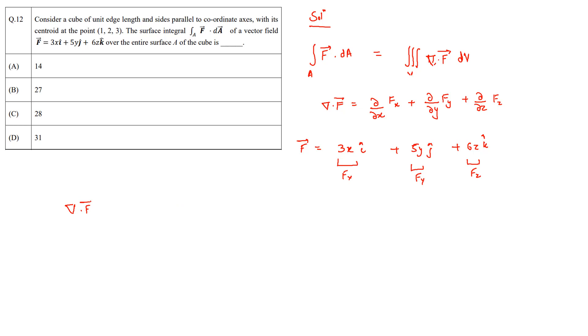The divergence of F becomes 3 + 5 + 6, which is equal to 14. Therefore, the Gauss Divergence Theorem can be applied and we can see that the surface integral is nothing but the volume integral of 14 times dV, or 14 times V. Here, since this is a unit cube of unit edge, the volume of the cube becomes 1, and then this surface integral just becomes 14 units.